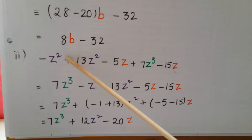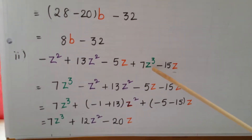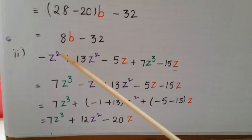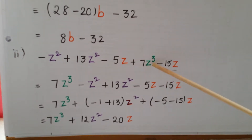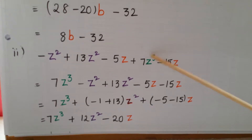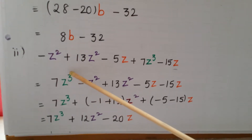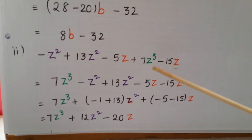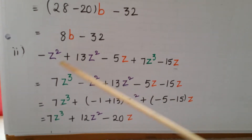The next problem is: minus z² plus 13z² minus 5z plus 7z³ minus 15z. Here the variable is the same but the powers are different — z² has power 2, z has power 1, z³ has power 3. So all literal factors are different. Write the highest power term first: write 7z³ first.